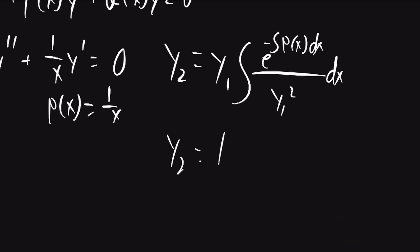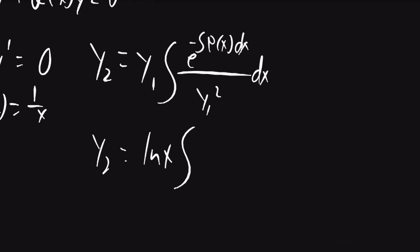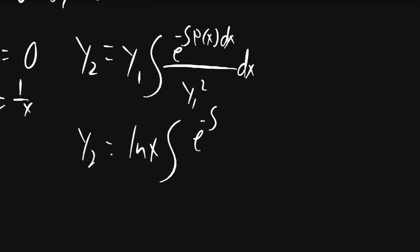y1 was given as lnx, so y2 will be equal to lnx times the integral of e to the negative power of 1 over x dx over lnx squared.